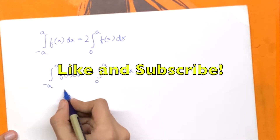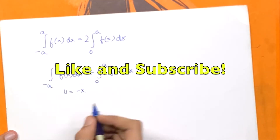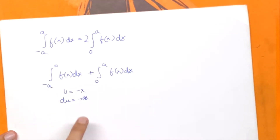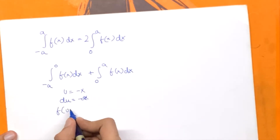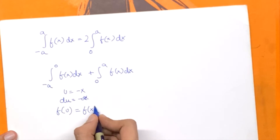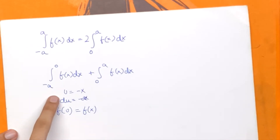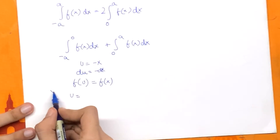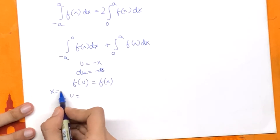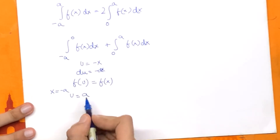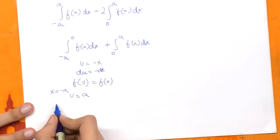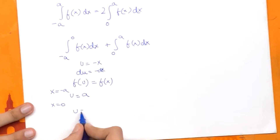Now let's substitute u = -x, which means du = -dx. We know f(u) = f(-x) = f(x), because this is an even function. Since we're substituting, we have to change the limits as well: when x = -a, u = a, and when x = 0, u = 0.